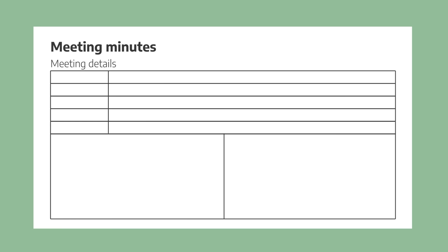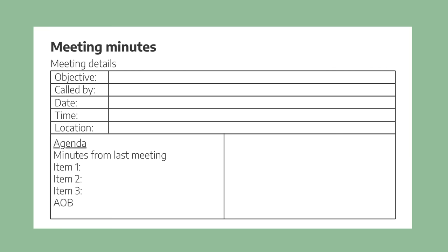Now let's move on to the second part of the lesson where we look at our template and what to include. The first things on our template are the meeting objective, who called it, the date, time, and location. Then include the meeting agenda. If you're wondering what AOB stands for, it's 'any other business' — this is often the last item on the agenda and gives participants time to discuss any other important or relevant business. In this section on the right we include the attendees — present and absent — and if it's a conference call it could also be relevant to include their location.